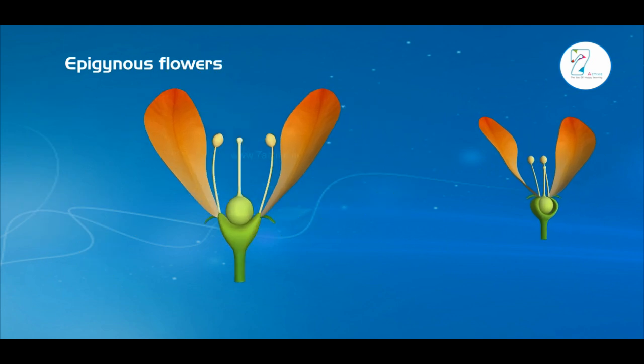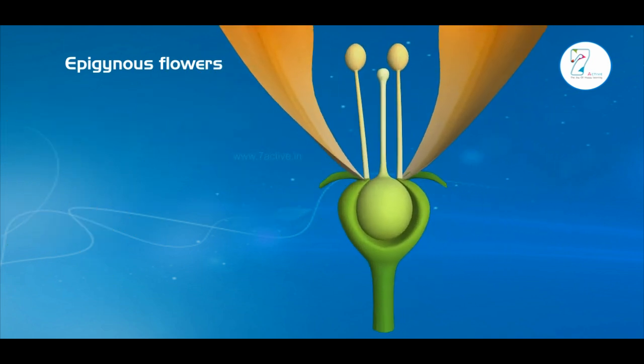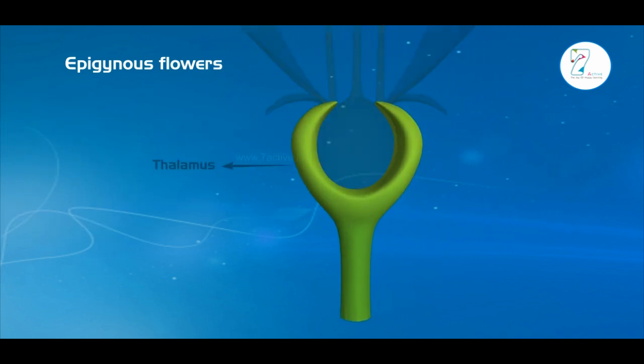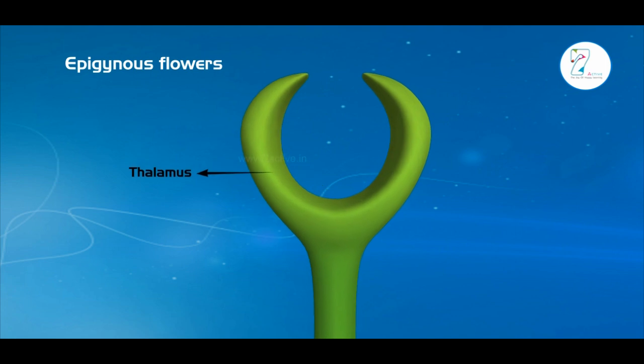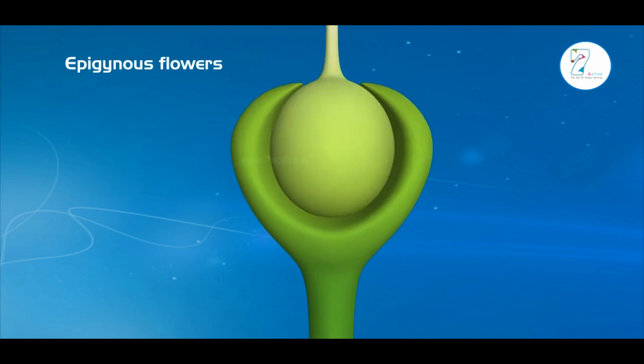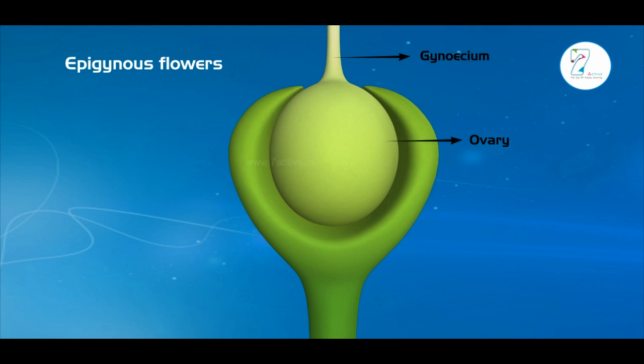3. Epigynous flowers. The thalamus is deep cup-like in appearance. The ovary of the gynoecium is completely embedded in the thalamus.